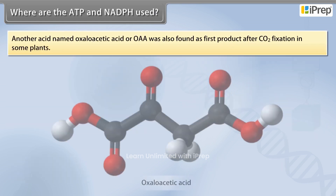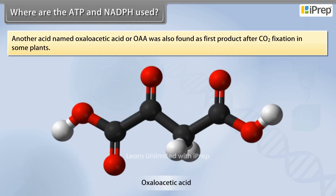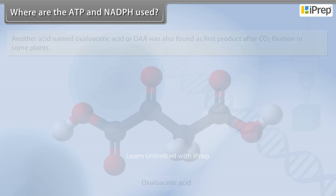Another acid named oxaloacetic acid, or OAA, was also found as the first product after carbon dioxide fixation in some plants.